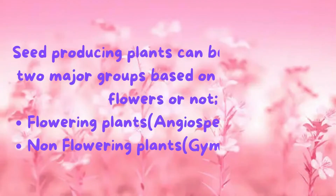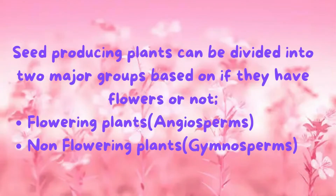Do you know? The seed-producing plants are divided into two major groups. First is flowering plants — they are called angiosperms. Second are non-flowering plants — they are called gymnosperms.